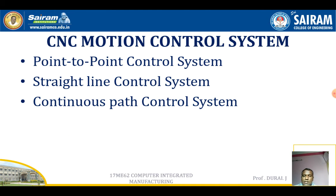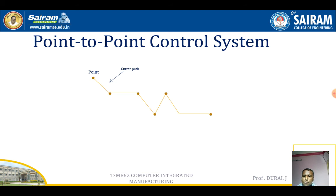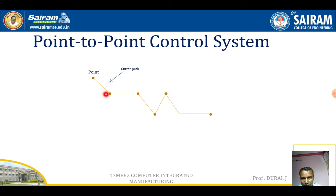CNC motion control systems: point-to-point control system, straight line control system, and continuous path control system. In the point-to-point control system, the tool movement takes place from one point to another point in a horizontal, vertical, or inclined manner — straight movement from one point to another.